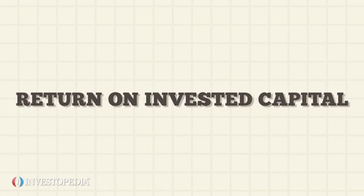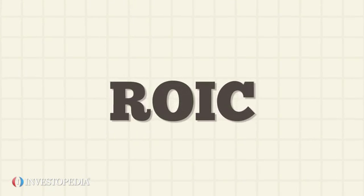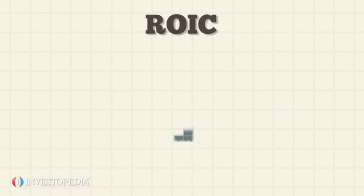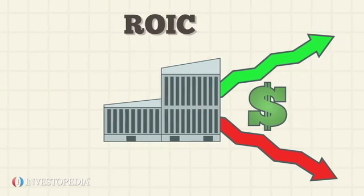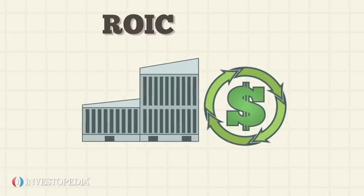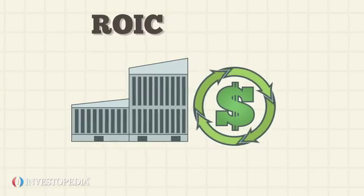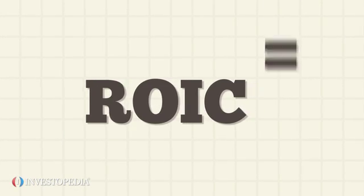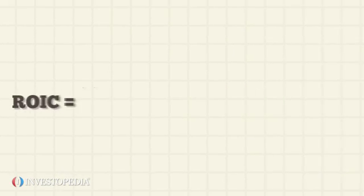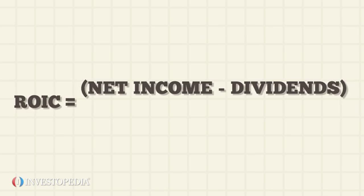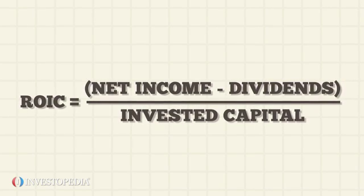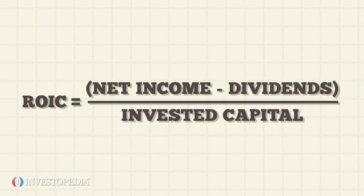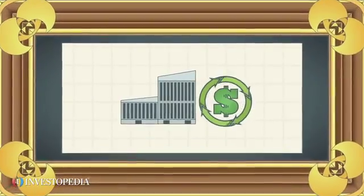Return on Invested Capital, or ROIC, is a fundamental method of determining a company's financial performance. It is used to measure how well a company is investing its capital. ROIC is calculated as net income minus dividends divided by invested capital. ROIC is often considered an accurate picture of